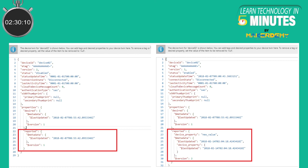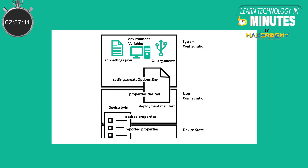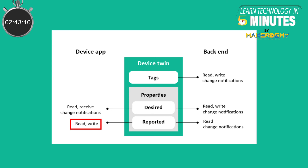The device app sets reported properties. Reported properties are used to receive state information from the device. Reported properties, just like desired properties, are used for synchronization and configuration purposes. The device app is authorized to write and read the properties, whereas the back-end can only read reported properties and query them.